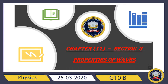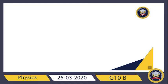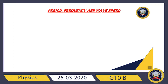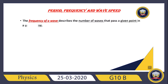As we have studied before the types of waves, today we are going to calculate the period, the frequency, and the wave speed of a wave. The frequency of a wave describes the number of waves that pass a given point in a unit time.